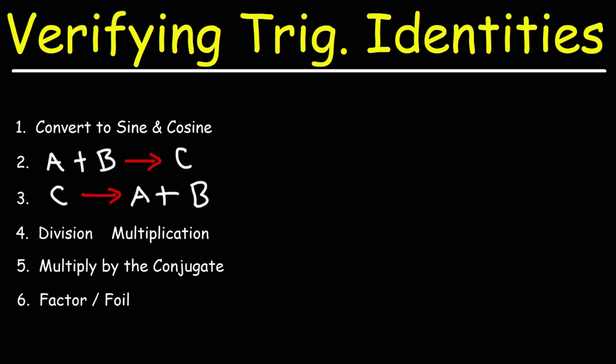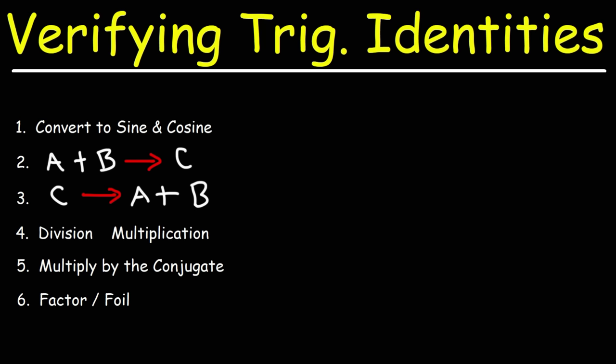Step three is basically the reverse of step two. If you have one term on the left and two terms on the right, to convert from one to two terms, you could distribute, or if you have a fraction, you can split that one fraction into two smaller fractions. For step four, converting division into multiplication — or vice versa — you just have to see it in action.